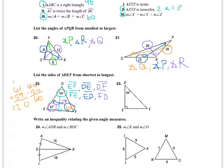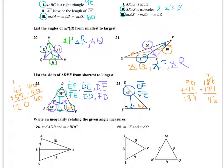For question 23, I again need to find the missing angle. I'm given 90 degrees and 44 degrees. Adding those and subtracting from 180 gives 46 degrees for angle F. The smallest angle is at D with 44 degrees, so the smallest side is EF. The next is 46 degrees across from DE. The largest angle is the 90-degree angle, across from side DF.